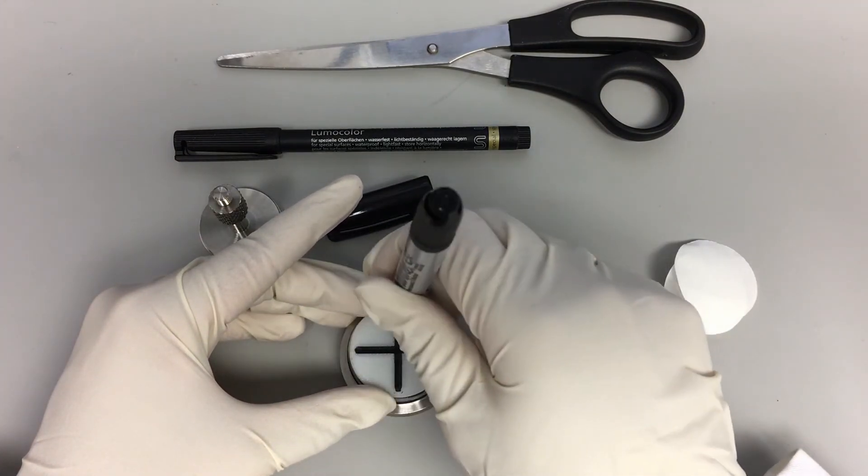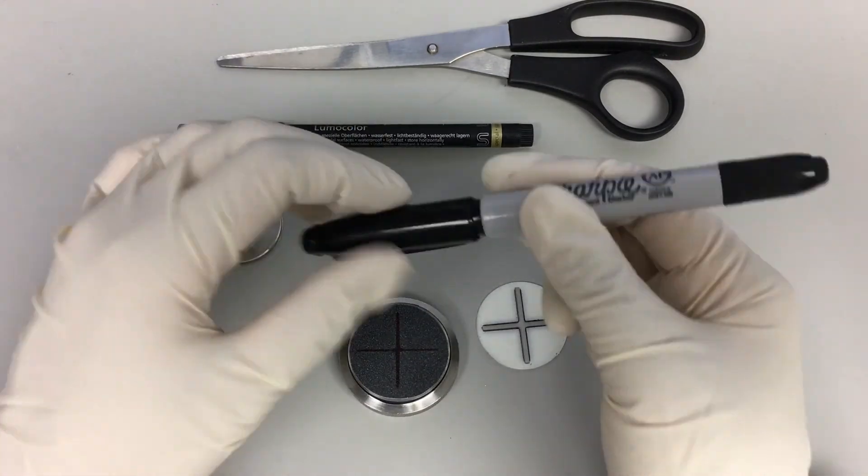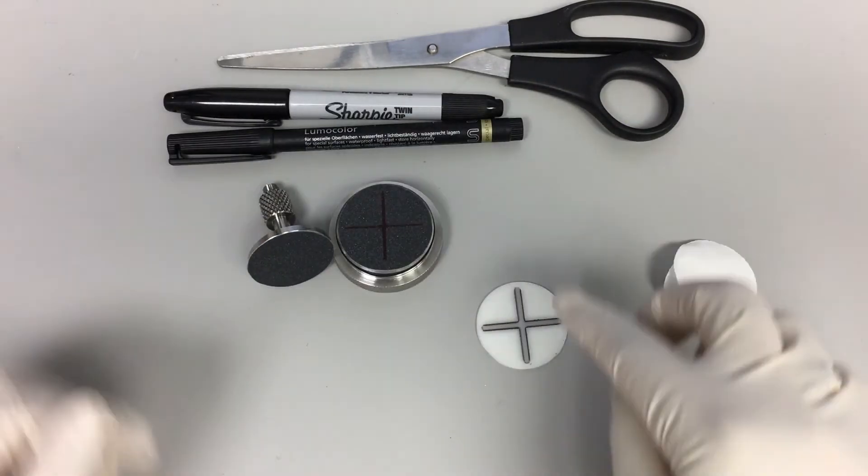If a circular stencil is not used, ensure that the cross is traced exactly in the center, for example by using a caliper.